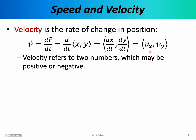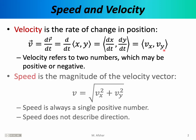When we speak of velocity we're really talking about two numbers, at least in two dimensions. Those two numbers are the x coordinate and the y coordinate, and each one at any given time can be positive, negative, or zero. Speed, on the other hand, is the magnitude of the velocity vector — that is the precise definition of speed. Once you have the two components of the velocity vector, you square each one, add them together, and take the square root, and that gives you speed — the length or magnitude of the velocity vector.